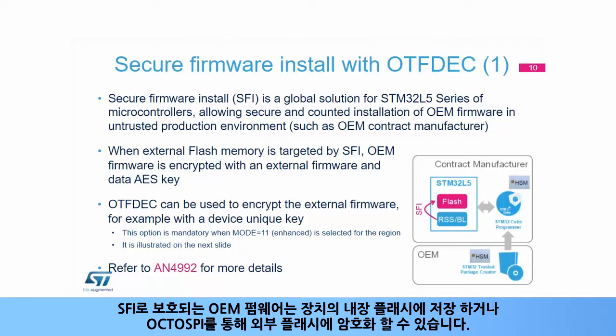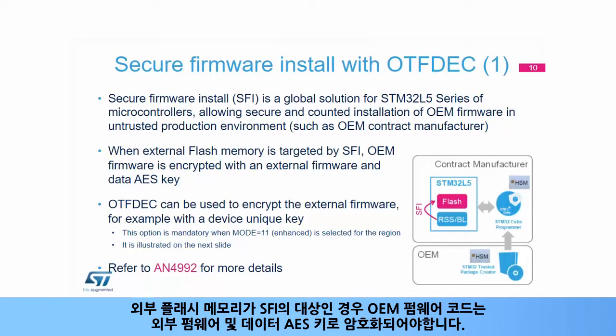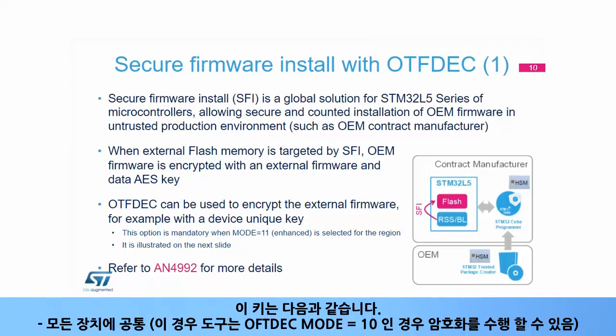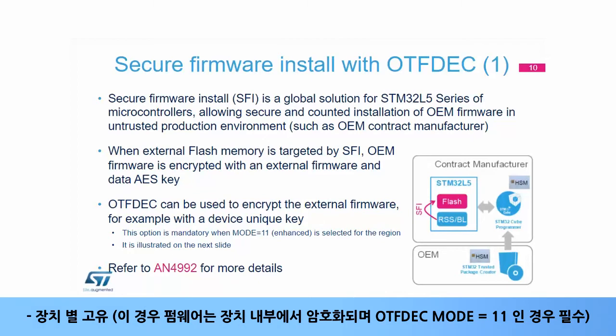OEM firmware protected by SFI can be stored in the device's embedded flash, or encrypted in external flash connected via OctoSPI. When external flash memory is targeted by SFI, OEM firmware code must be encrypted with an external firmware and data AES key. This key can be common to all devices — in this case tools can perform the encryption if OTF-DEC mode equals 1-0 — or unique per device, in which case firmware is encrypted inside the device, which is mandatory if OTF-DEC mode equals 1-1.